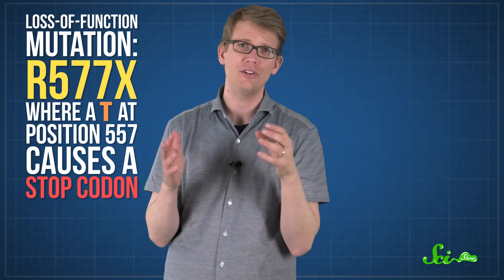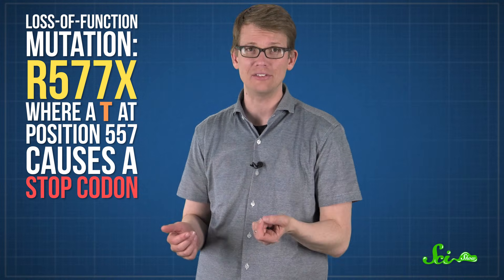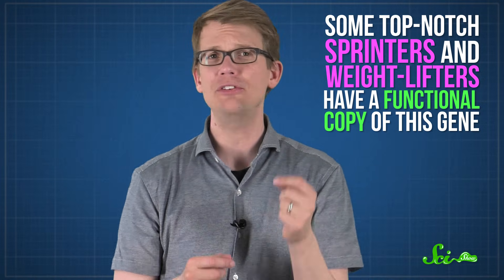So, if everyone has this gene, why can't we all sprint like Usain Bolt? Well, lots of people have a loss-of-function mutation in the ACTN3 gene, so they don't have working alpha-actinin-3 proteins. But it's been found that some top-notch sprinters and weightlifters have at least one functional copy of this gene, which means they can make the proteins that might help with seemingly superhuman bursts of power and speed.